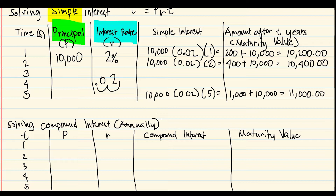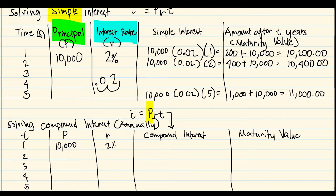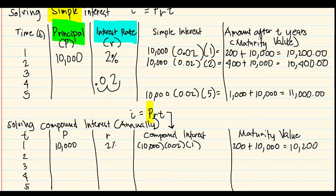The formula is still P × r × t, but the key difference is the principal changes each year. The maturity value of one year becomes the principal for the next. In year one, we deposited 10,000 and the interest rate is still 2%, so: 10,000 × 0.02 × 1 = 200 pesos.